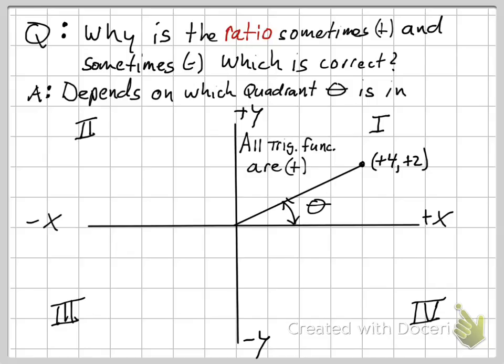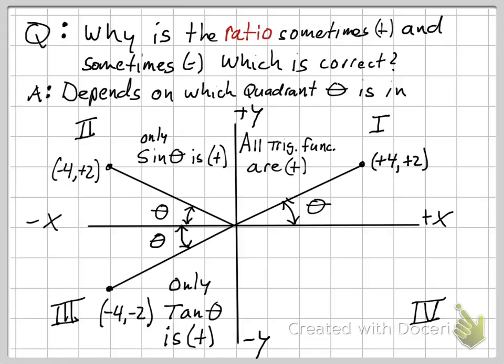So, if we draw it in first quadrant, all of our trig functions are going to be positive. If that point that we plot ends up in the second quadrant, only the sine function will be positive.